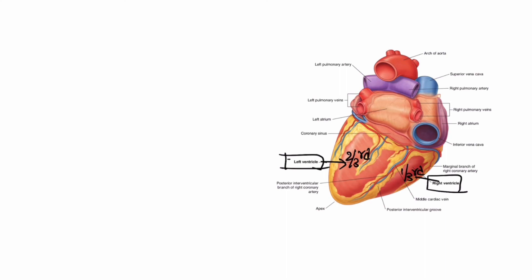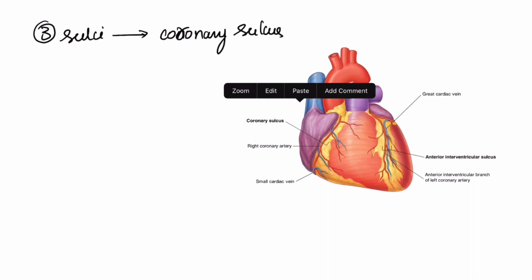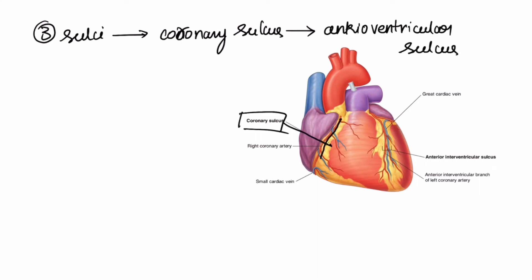Now let us look at the sulci. We have three sulci. The first is the coronary sulcus, also called the atrioventricular sulcus. This coronary sulcus separates the atria and ventricles and is present circumferentially around the heart.